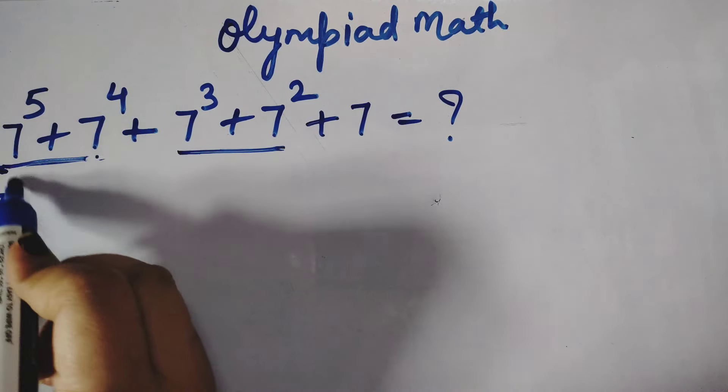Now, 7 raised to the power 5 plus 7 raised to the power 4. You can see which is common here: 7 raised to the power 4. So we take out 7 to the power 4, and inside is 7 plus 1.